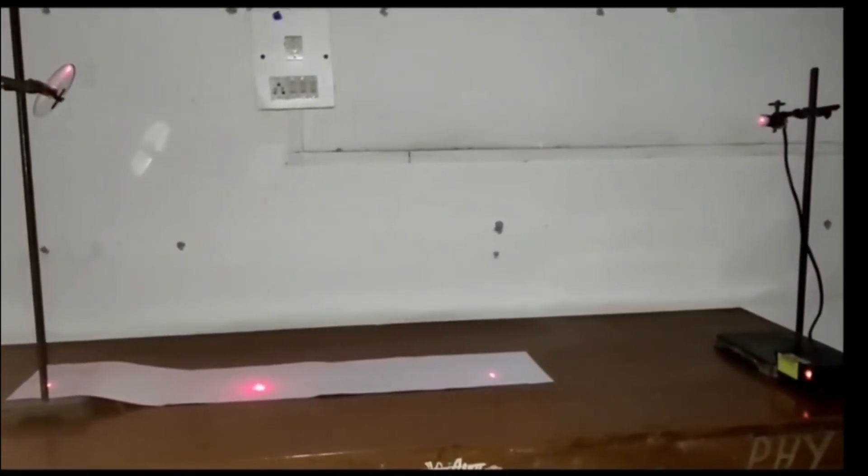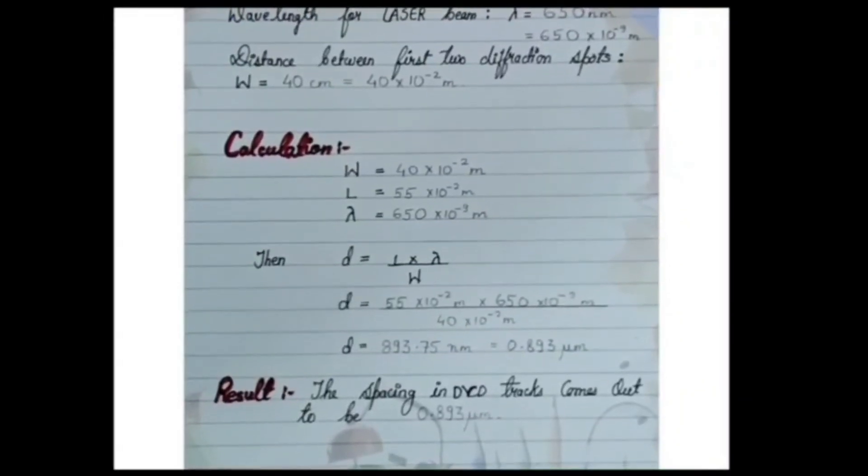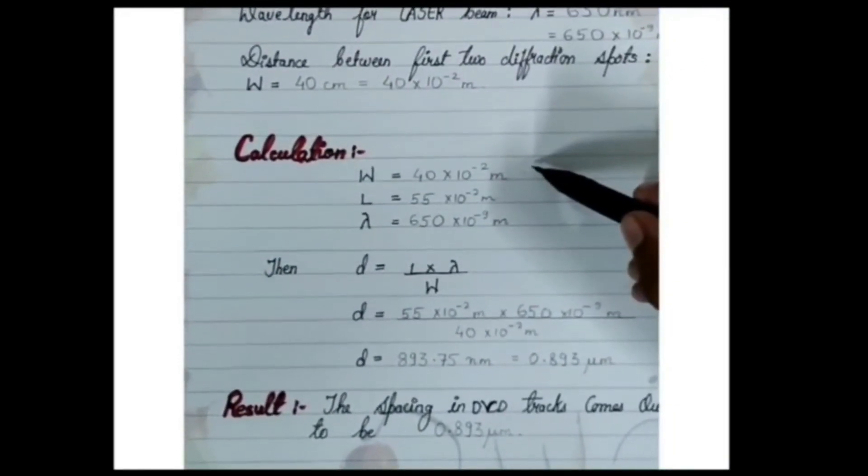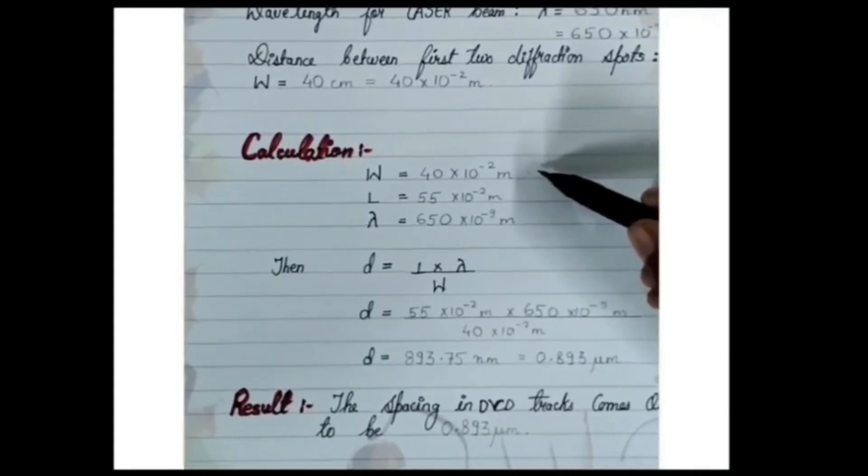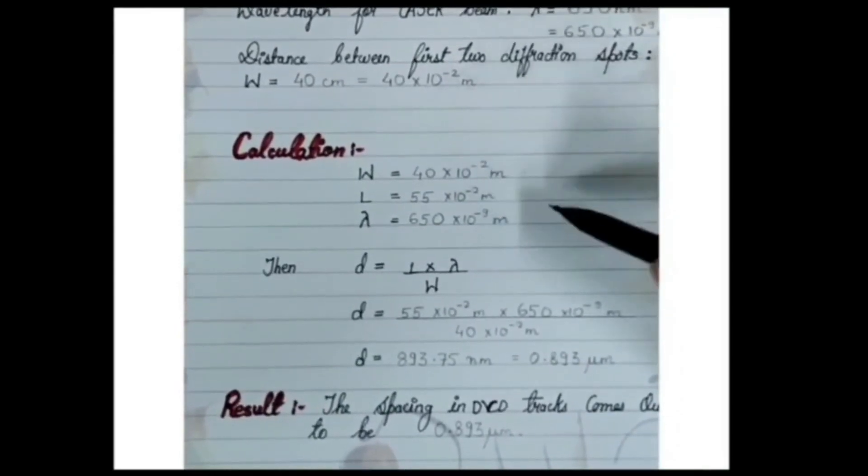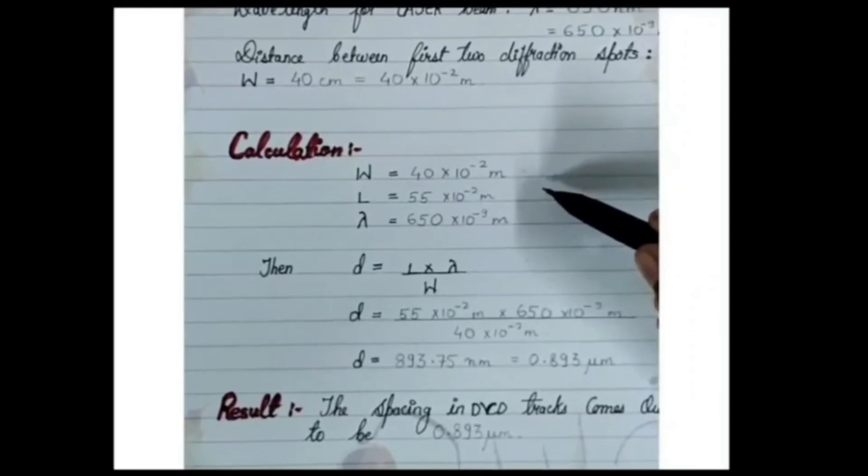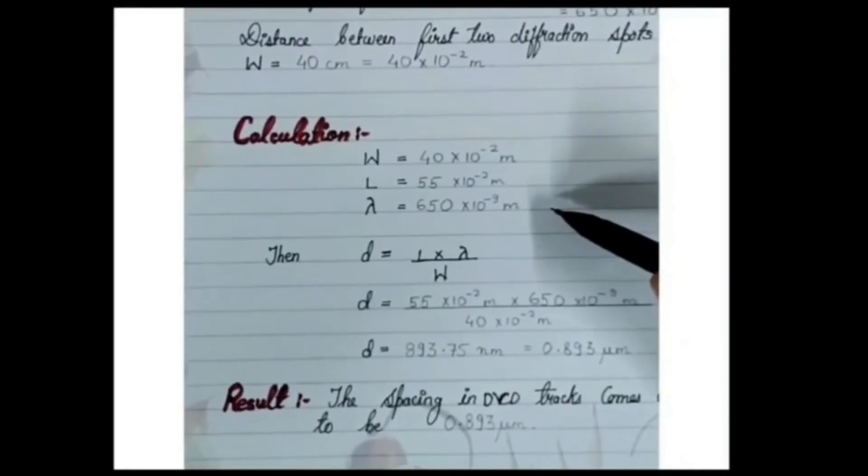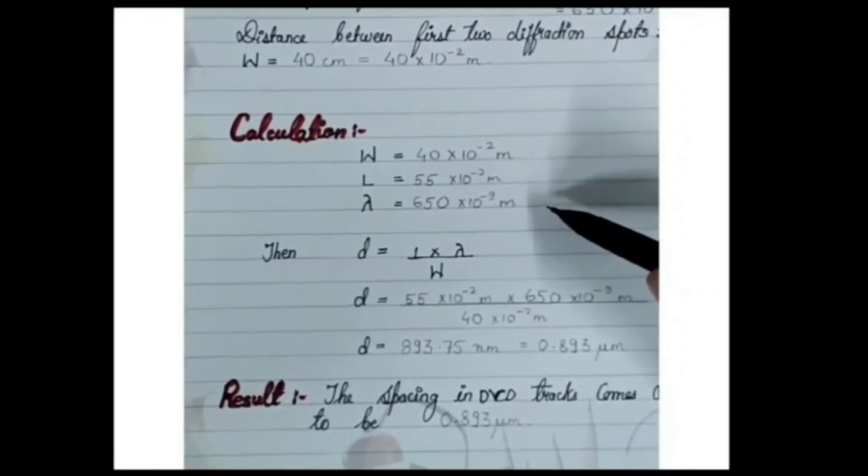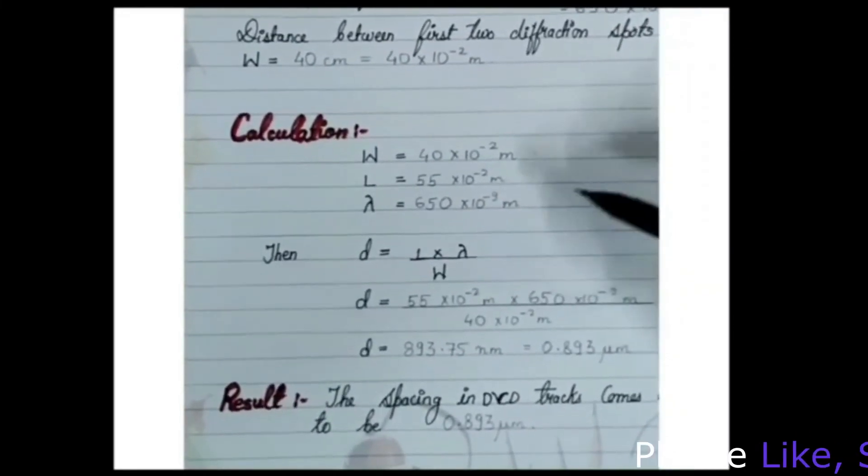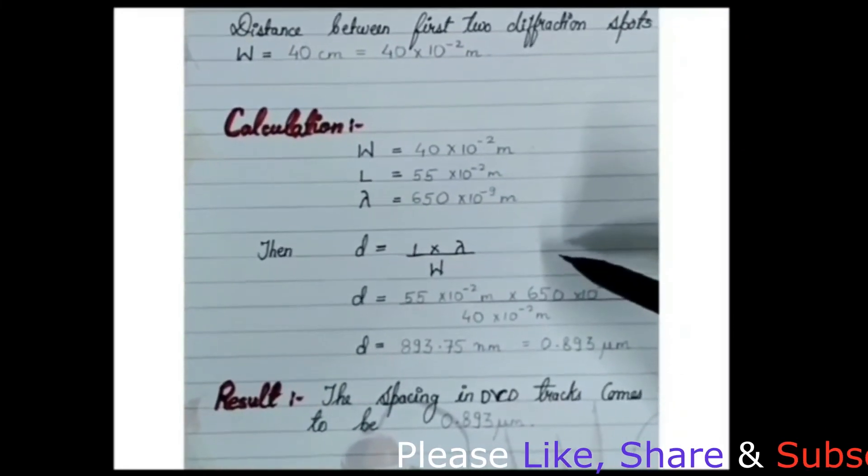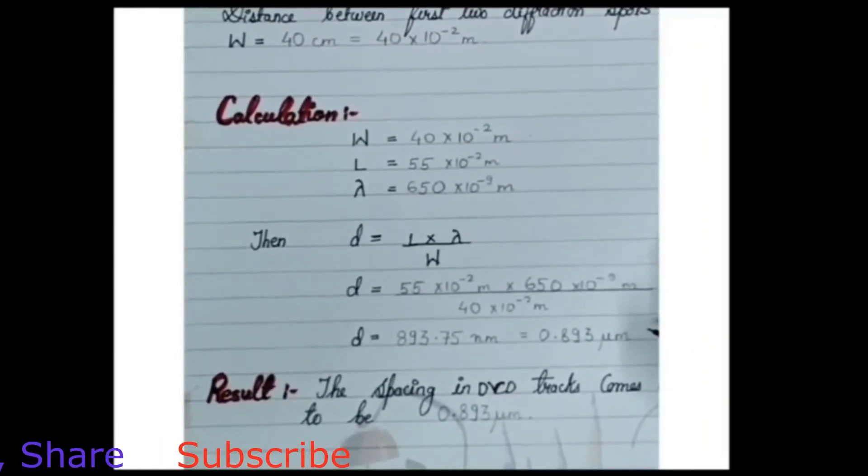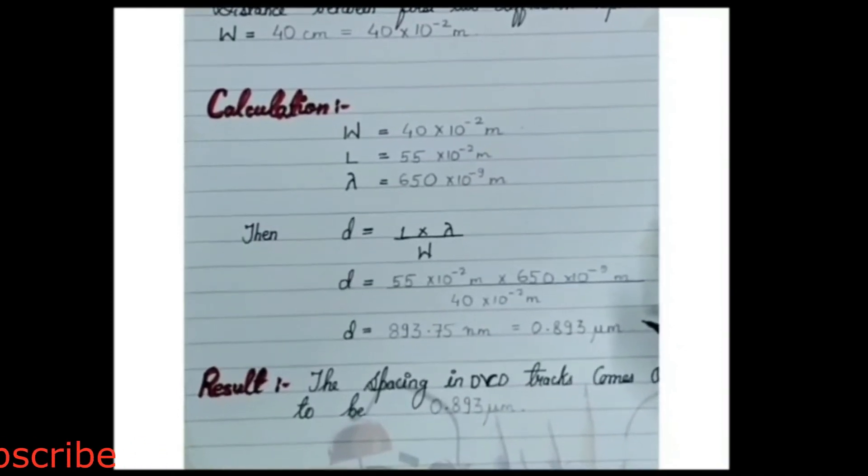So let us start. For the calculation we have distance between first two diffraction spots which is 40 cm, distance of laser beam from the base which is 55 cm, and the laser beam wavelength of 650 nm. Then by the formula d = l × λ / w, we have got the answer which is 0.893 micrometers.